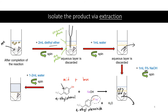After that, we wash the organic layer with 1-2 mL of water. There can always be a few droplets of aqueous layer trapped in the organic layer. By washing with bulk water, since like dissolves like, these water droplets are drawn into the wash water, removing traces of water from the organic layer.